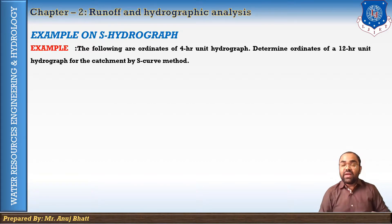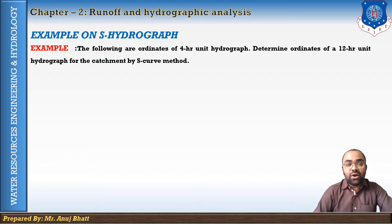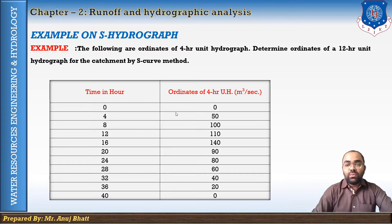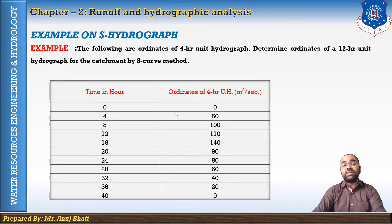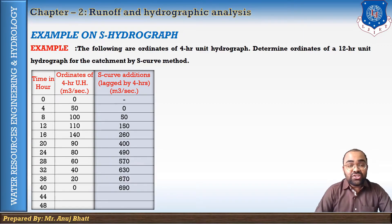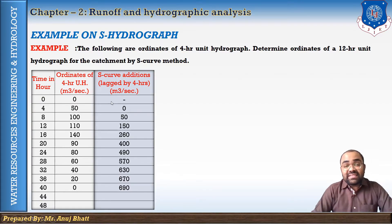If the problem does not specify the S-curve method, we could use the normal unit hydrograph method; but if S-curve method is specified, we must follow this procedure. Let's first look at the ordinates of the 4-hour unit hydrograph — at the initial stage the ordinates obviously start at zero. We need to convert these unit hydrograph coordinates into S-curve ordinates. For the S-curve additions we lag the data by 4 hours.